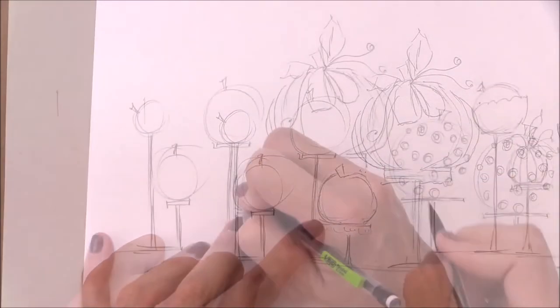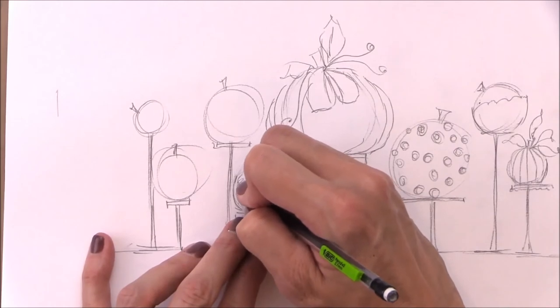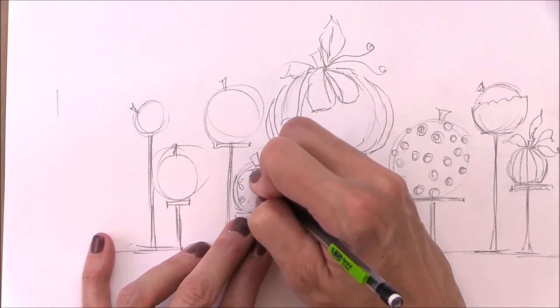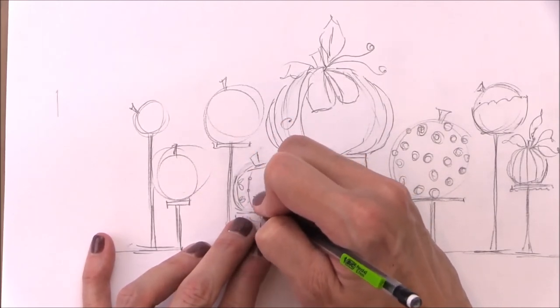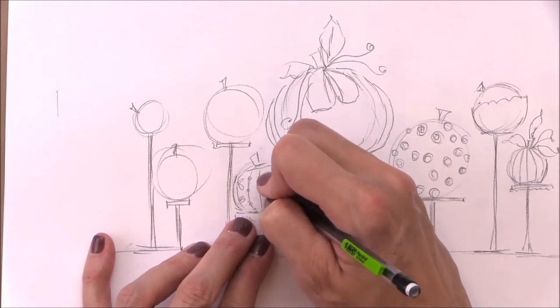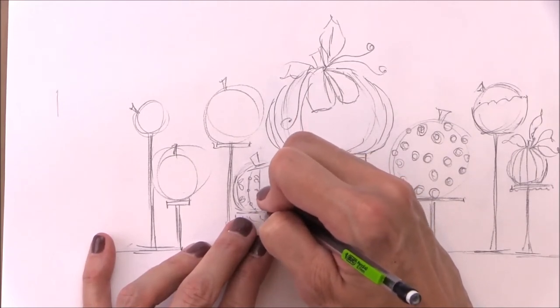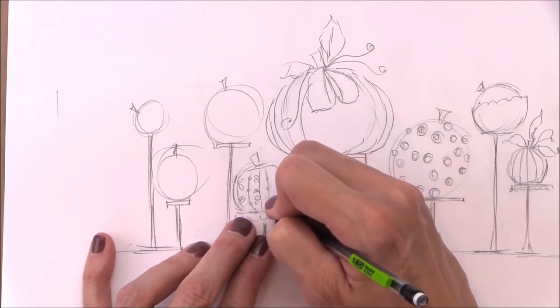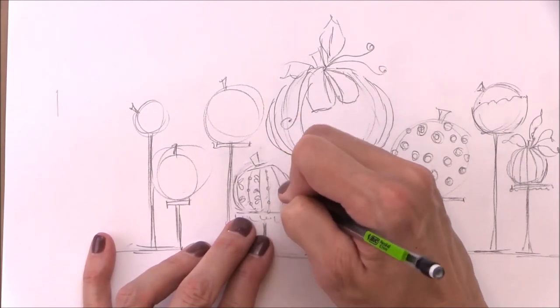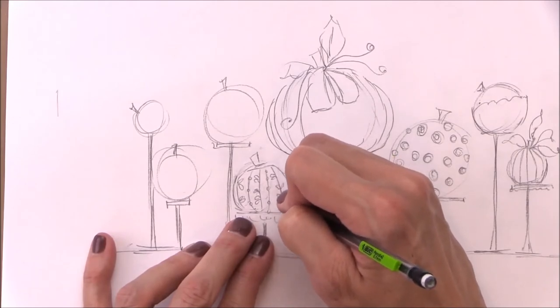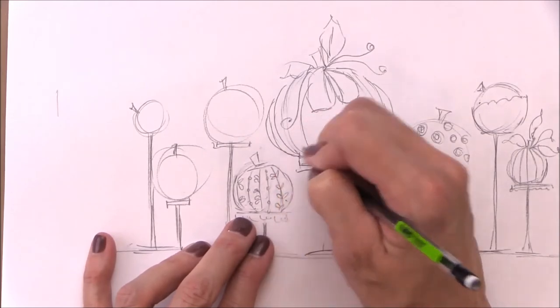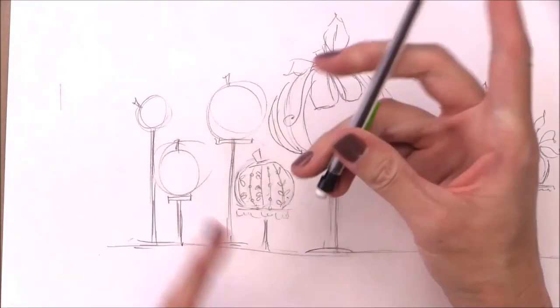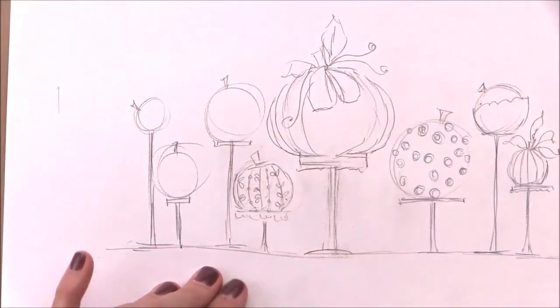So a little pattern on here, so I'll put a little line and some little leaves, a little line, a little circle, a little line, some little leaves. Okay, just kind of alternate the pattern here. Something like that, something like that. Okay.